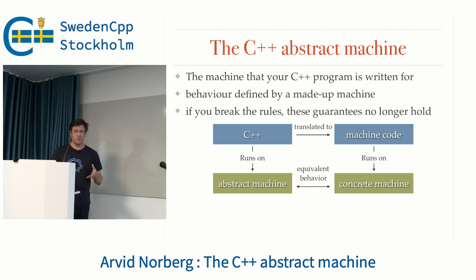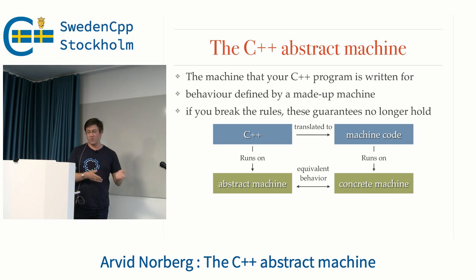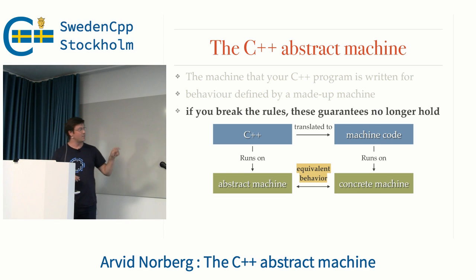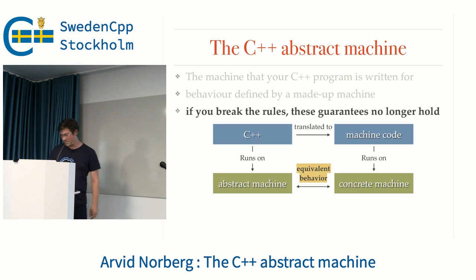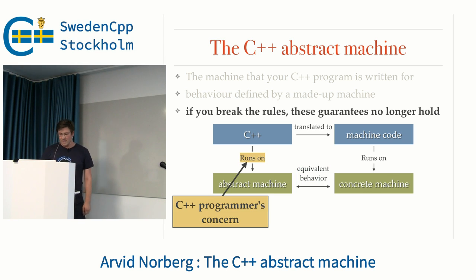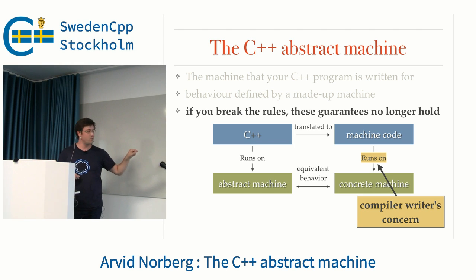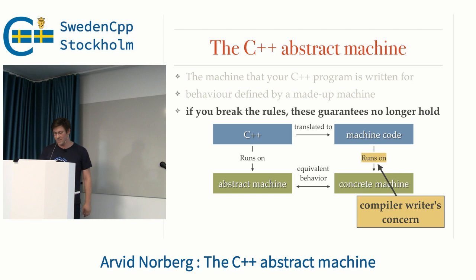There are certain rules that you have to follow in order for your C++ program to be a valid C++ program and to be valid when it runs on the abstract machine. And only if you follow those rules will you have this guarantee of the concrete machine program having the same behavior as your C++ program. So that's your concern, that your program runs on the abstract machine. And that's the compiler writer's concern — that assuming you are following all the rules, the machine code runs correctly on the concrete machine.